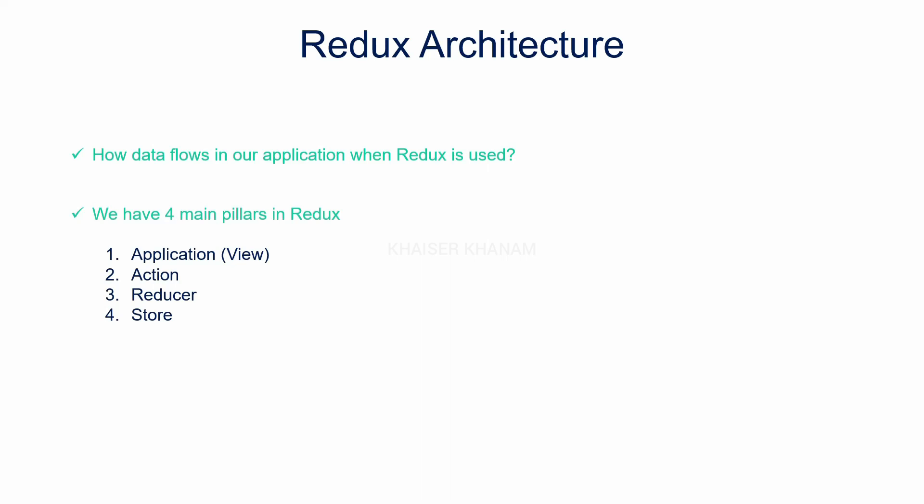We also have action, reducer, and store. These three are the main concepts in Redux. Once you understand these three concepts, you are almost clear with Redux architecture. In Redux, data flows using these four main pillars: application, action, reducer, and store.